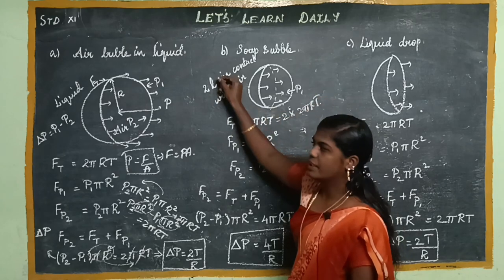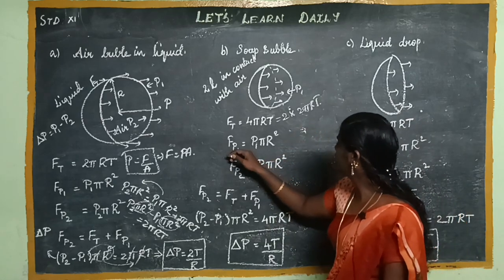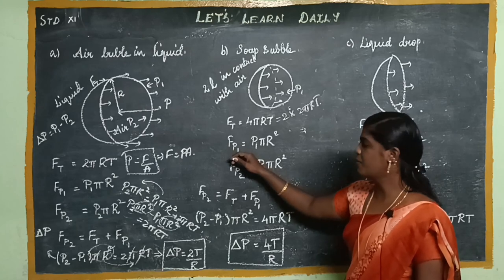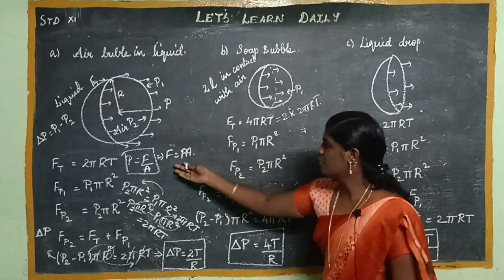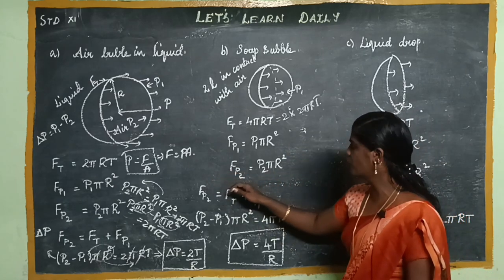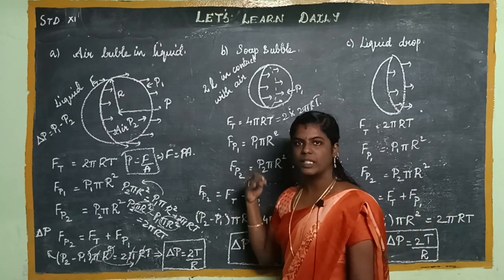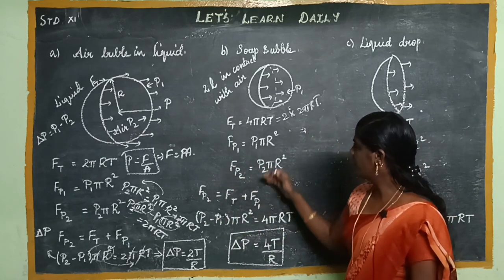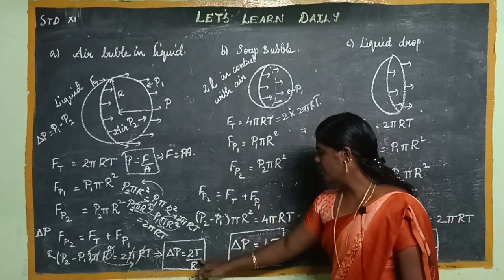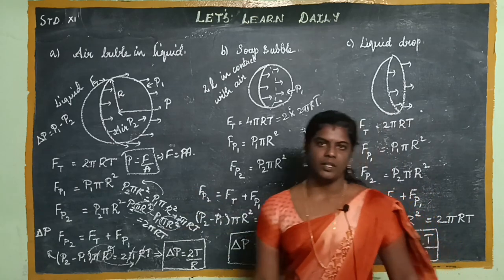For a soap bubble with two liquid layers, the outside force is Fp1 = P1·πR² and the inside force is Fp2 = P2·πR². In equilibrium, substituting and rearranging, this case gives 2T/R for each surface, so the total excess pressure is ΔP = 4T/R.